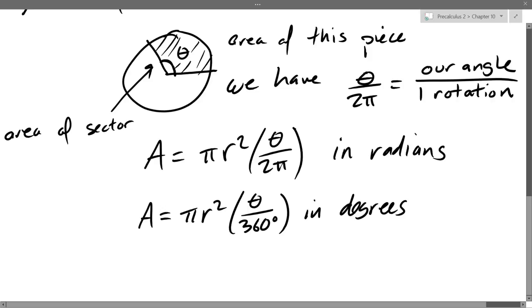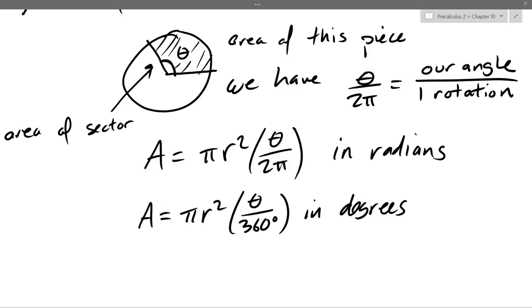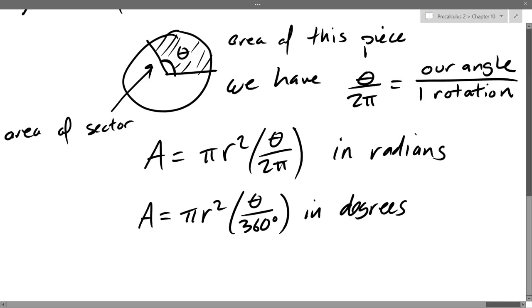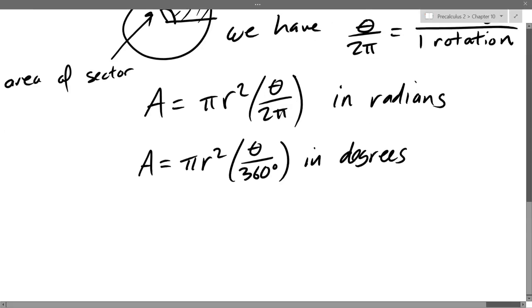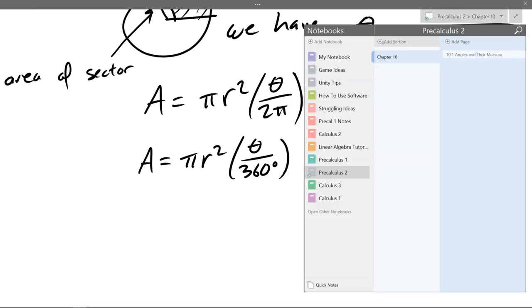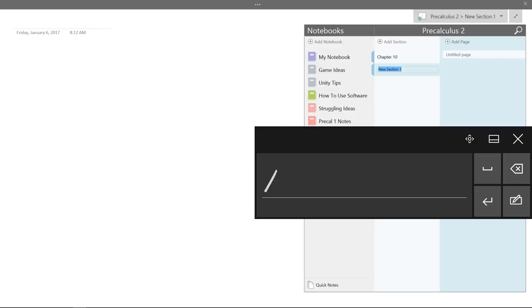And we'll be told what theta is. So this looks like probably 2 pi over 3. I say 2 pi over 3 because 3 pi over 3 is a half a rotation, and that looks to be about not quite a half rotation, so a little less than pi. We'll get much better at estimating what angles are in radians when we move forward. So now we're going to go to the next section, which is trig functions. That is the end of 10.1.